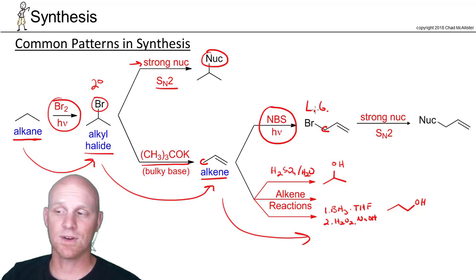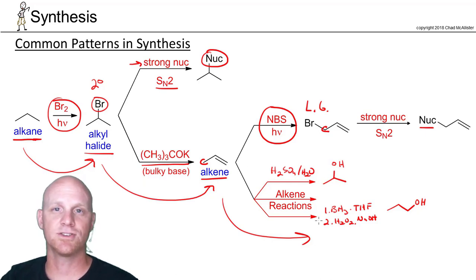Potentially if you had more carbons, you might be doing E2. Again, you might be using a strong nucleophile like I did in this case, or if you had a longer carbon chain, you might be adding a strong base and forming a second alkene as well. But this is a common pattern in synthesis: alkane to alkyl halide, alkyl halide to alkene, and then you've got a variety of options for all the different alkene reactions you've learned.